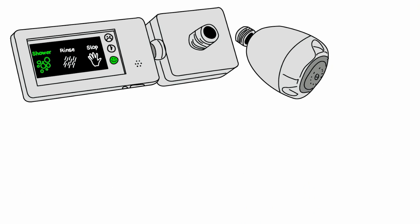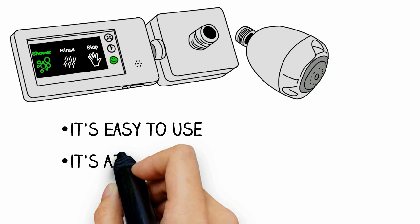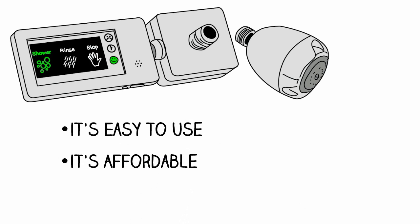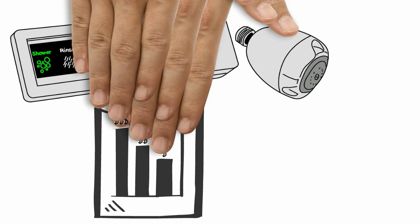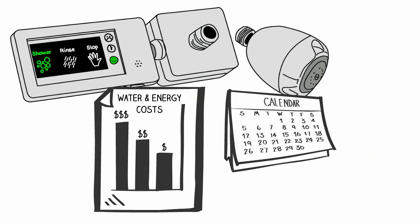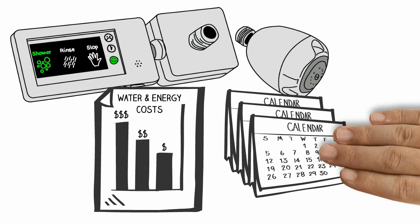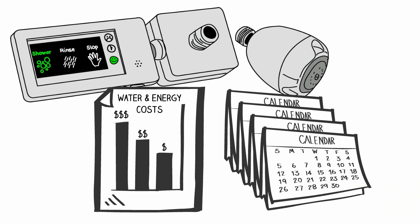Now, learning to conserve water has never been easier or more affordable. Your ShowerSmart typically pays for itself through water and energy savings in as little as four months, meaning it actually costs you money not to do this.